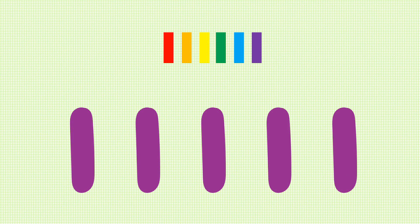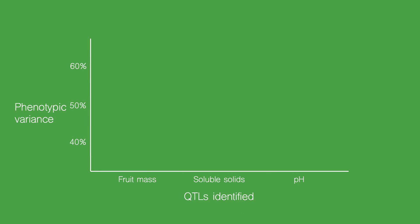Factors for pH were found on 5 chromosomes, with increased pH linked to 4 QTLs and decreased pH linked to 2 QTLs. Together, the QTLs identified for fruit mass, soluble solids, and pH account for 58%, 44%, and 48% respectively of the phenotypic variants among the backcross progeny.